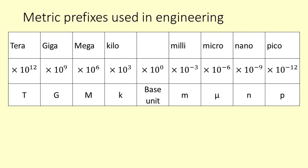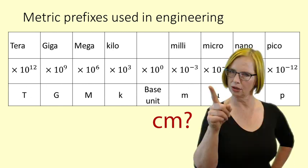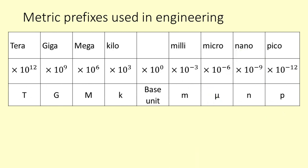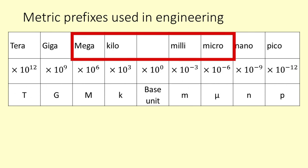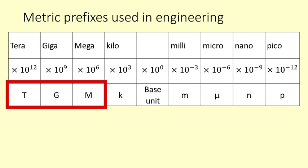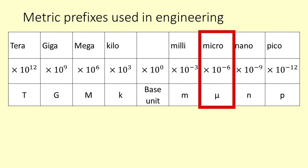Here are the other prefixes used in engineering. Note that there is no centi — engineers do not use centimetres. You are most likely to use mega, kilo, milli and micro, but you need to know the other ones as well. Note also that tera, giga and mega all have uppercase or capital letters, and micro has the Greek letter mu. In handwriting it can look like this — it is good to emphasise the tail when writing it by hand.